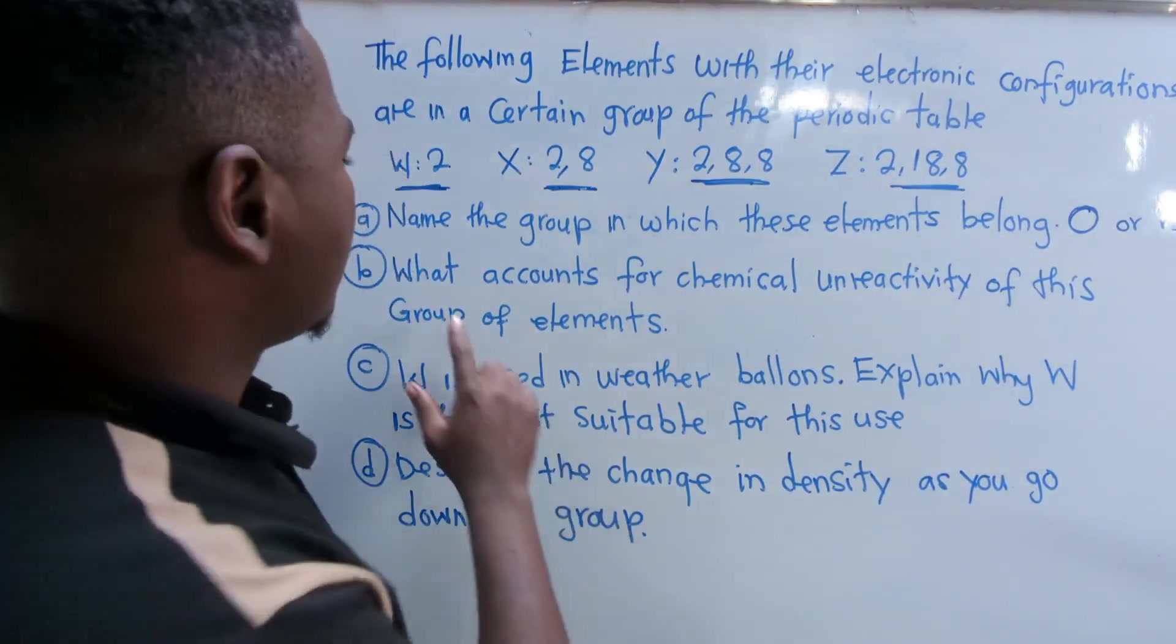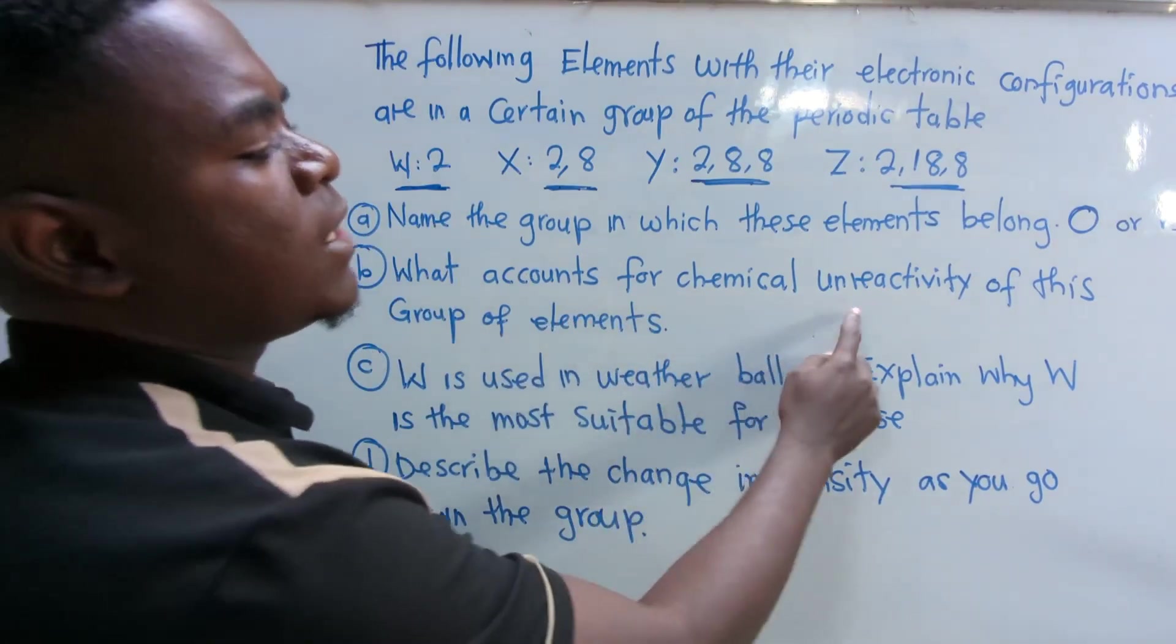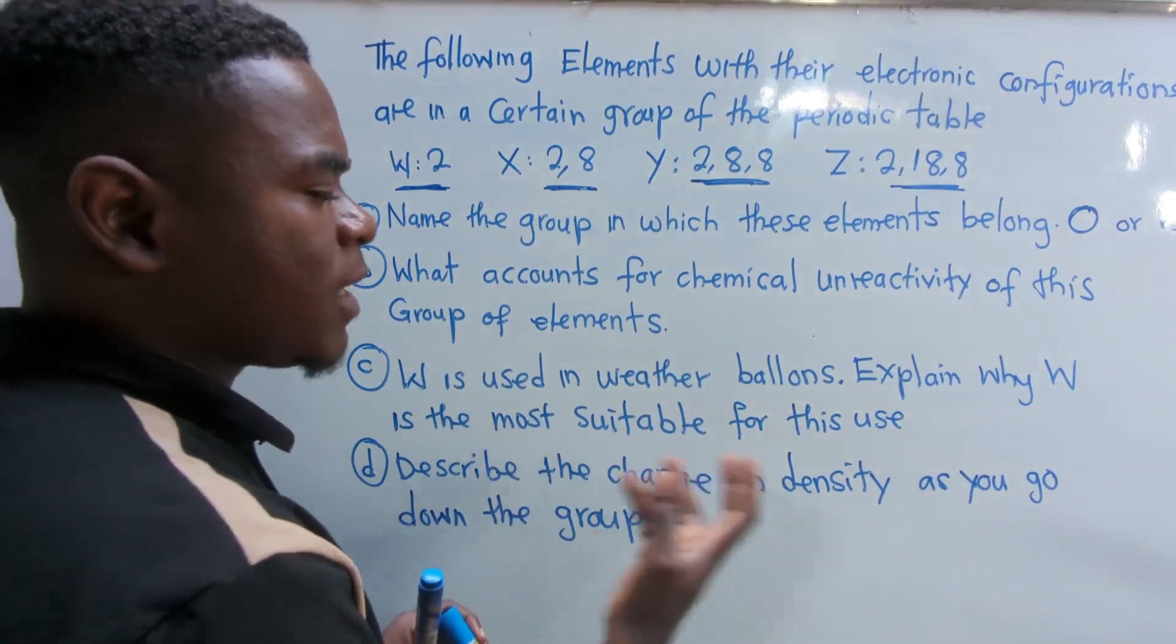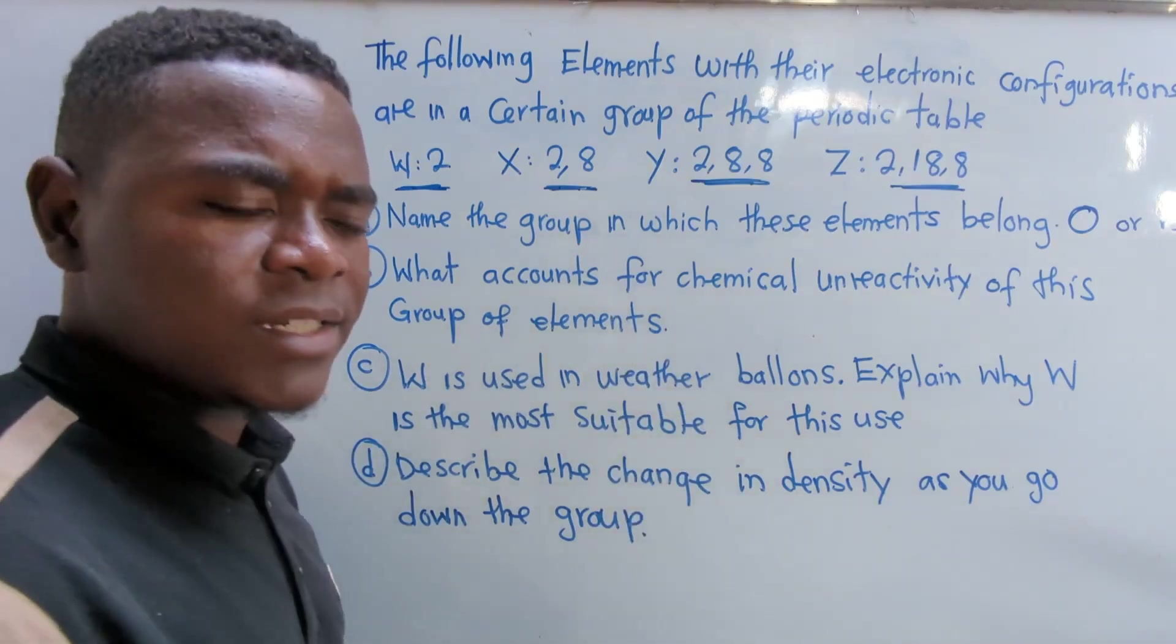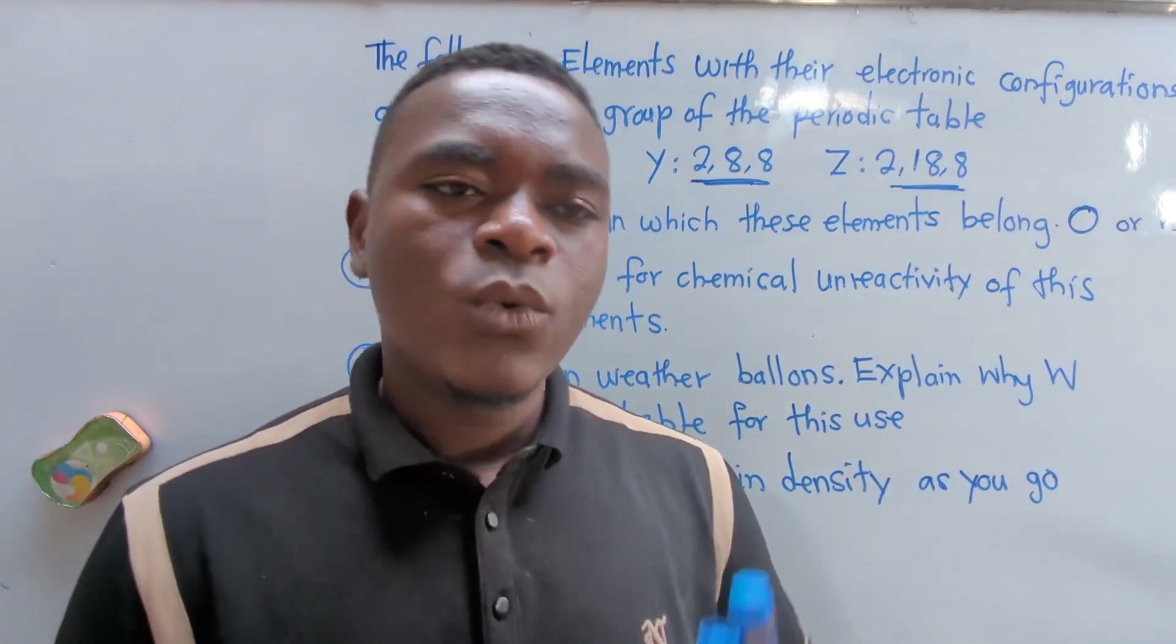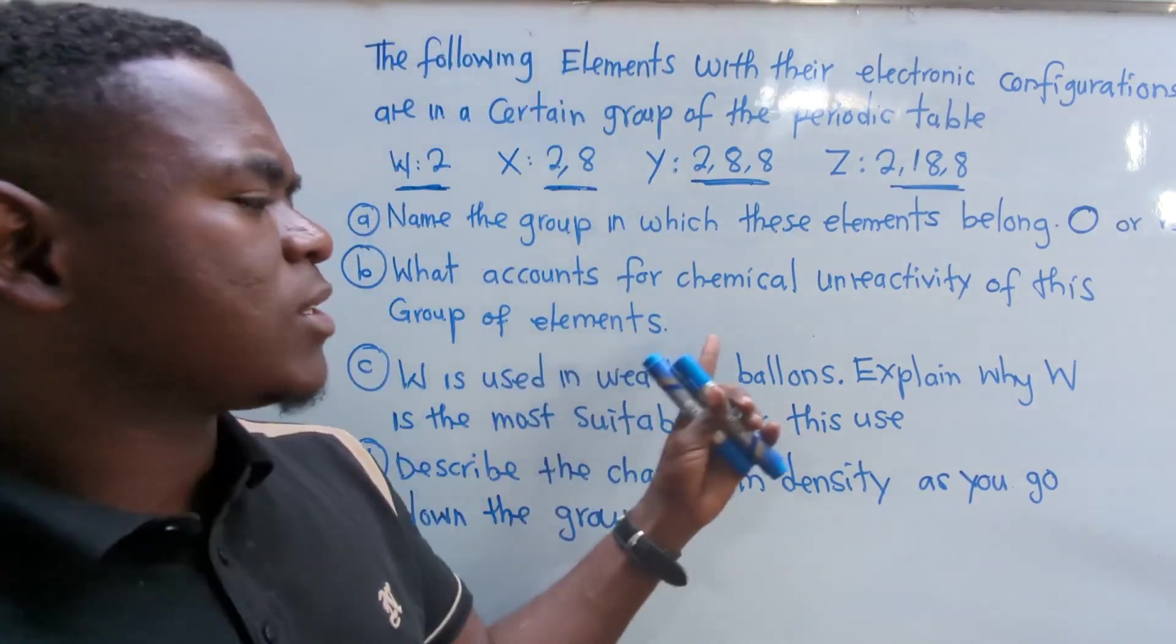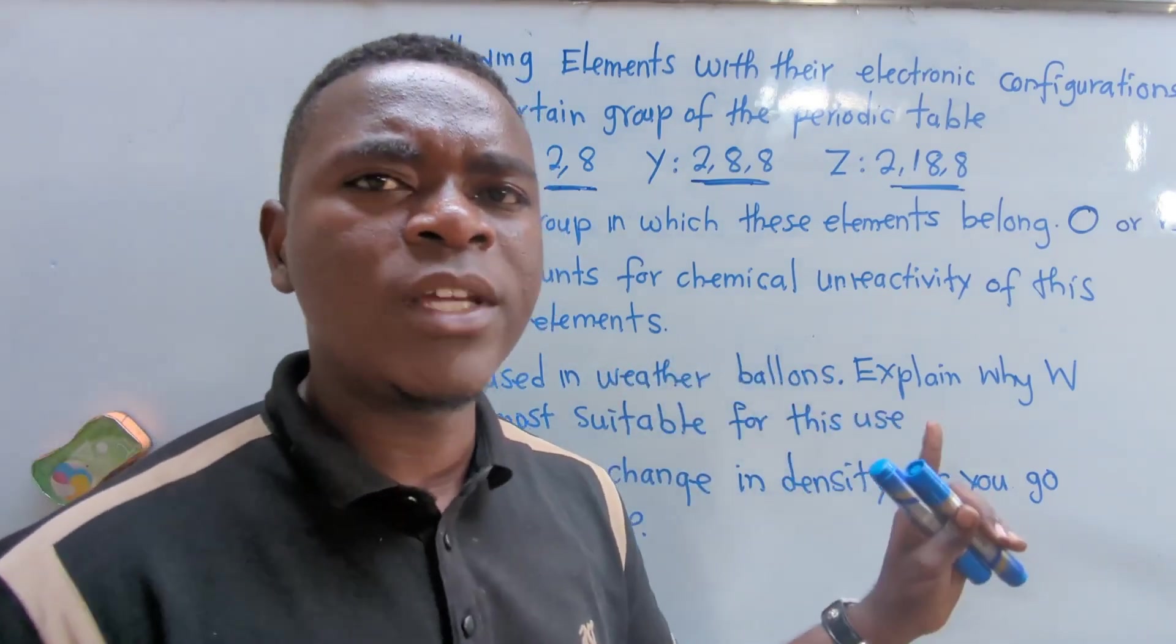Aside knowing this, we've got another question that is saying, what accounts for chemical unreactivity of this group of elements? So the accounts that makes them unreactive, it is because of their electronic configuration. They have got full electrons in their outermost shell, which means that they don't have to gain or to lose electrons for them to be stable. So the answer that you're supposed to put here, you just say, because of their electronic configuration.